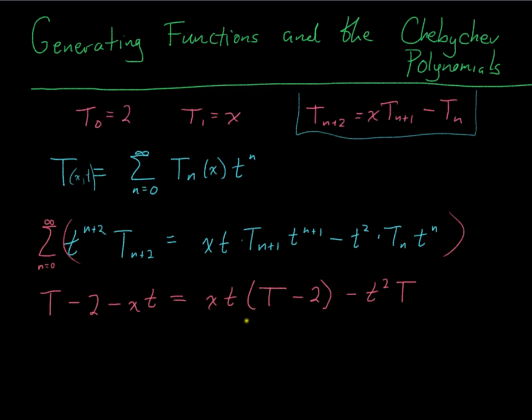And I just do simple algebra to get T by itself. I've got, this side is xt times T, minus 2xt, minus t²T.